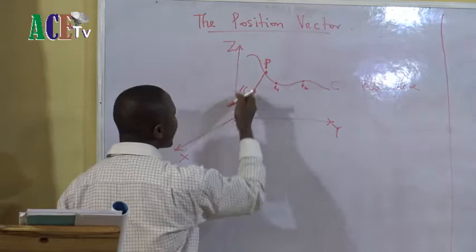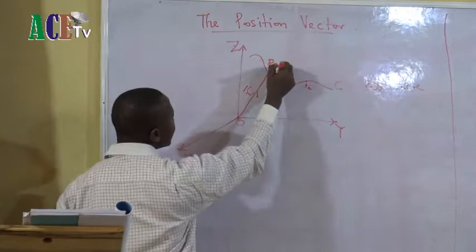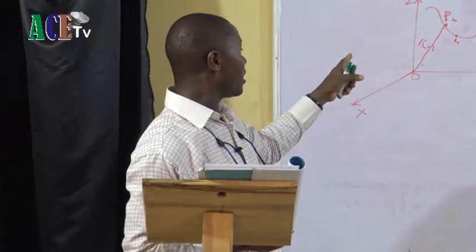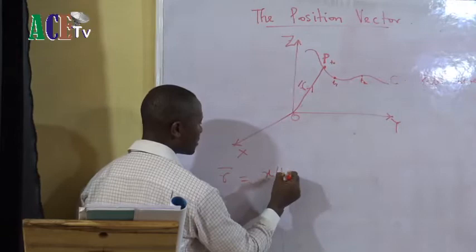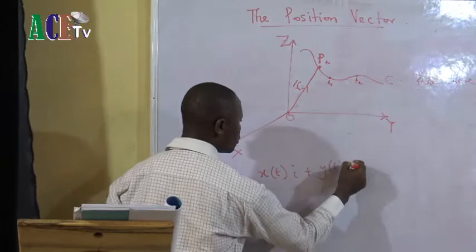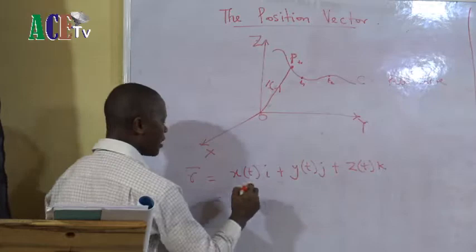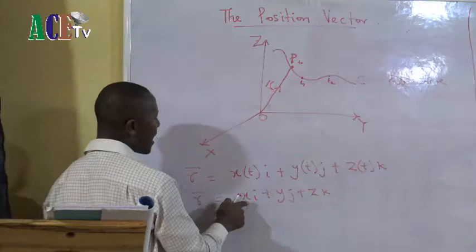We'll be defining this position vector R as the position of the particle P relative to the origin zero at time T naught. So if it moves to another place, it will be depending on time as the motion moves on. We'll define a vector in terms of the axes X, Y, Z, and we would have R defined as X(t)i plus Y(t)j plus Z(t)k. This is the definition of a position vector. Generally, the position vector of the particle P is defined as Xi plus Yj plus Zk.